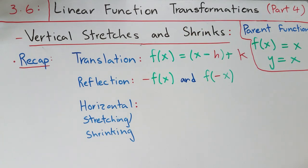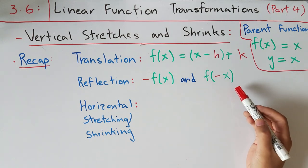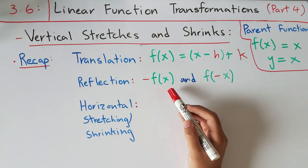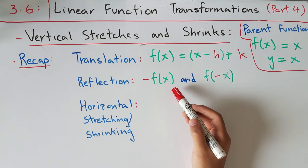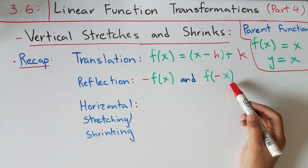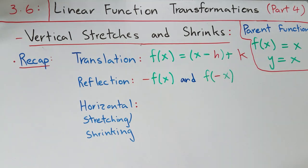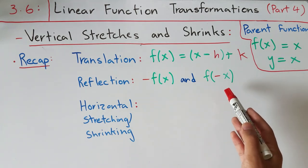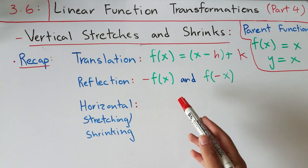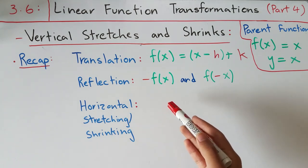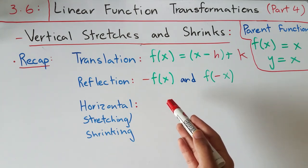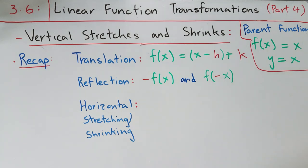For the reflection transformation we learned there are two types. One is negative f(x) and the other is f(negative x). In negative f(x), you're changing only your y-values by multiplying them by negative one, while in f(negative x) you're multiplying all x-values by negative one. In negative f(x) you're reflecting across the x-axis, while in f(negative x) you're reflecting across the y-axis.